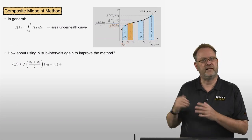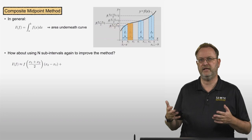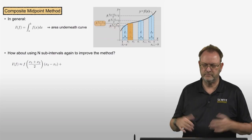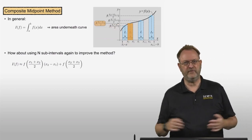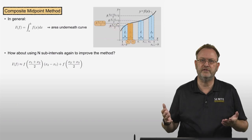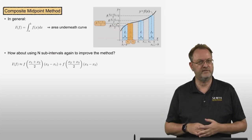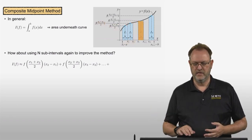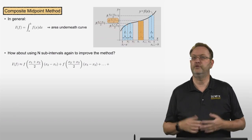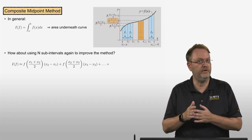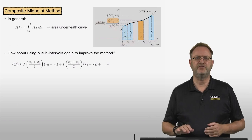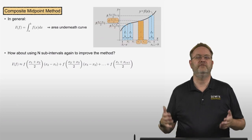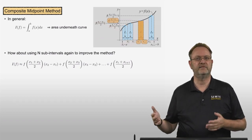Then we move on to the second subinterval. The height is f evaluated at the midpoint (x2+x3)/2, and the width is x3 minus x2. For the general ith subinterval, the height is the function value at the midpoint: f evaluated at (xi + x_{i+1})/2, and the width is x_{i+1} minus xi.